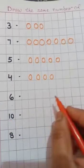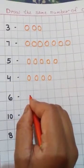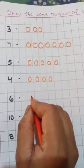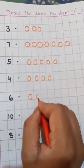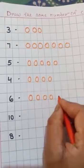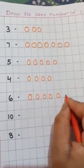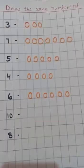Then, 6. How many circles I draw? We draw 6 circles. 1, 2, 3, 4, 5, 6. Very good.